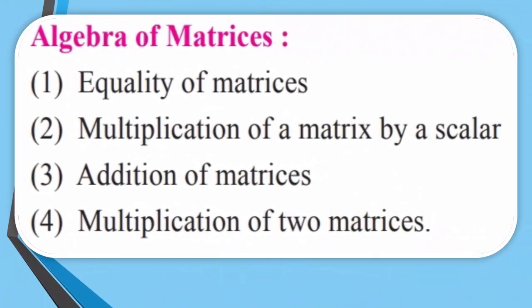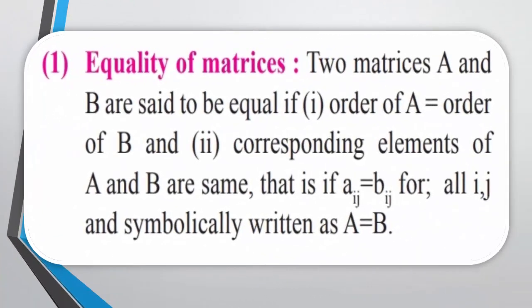So students, up till now we have revised the different types of matrices. Now let us learn something more — the algebra of matrices. In algebra of matrices we are going to learn about equality of matrices, multiplication of a matrix by a scalar, addition of matrices, and multiplication of two matrices. Two matrices A and B are said to be equal if the order of A equals the order of B and corresponding elements of A and B are the same, that is Aij equals Bij for all i, j. Symbolically it is written as A equals B.